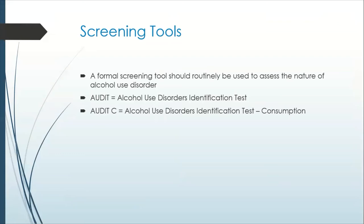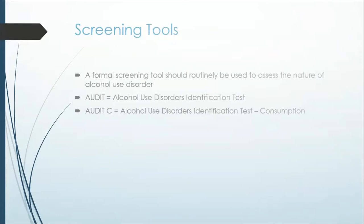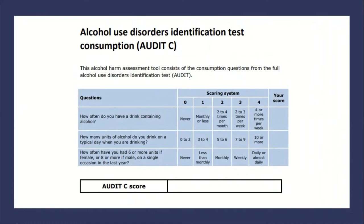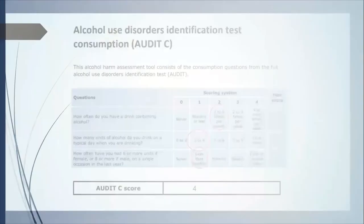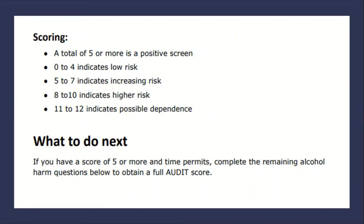I'll add a link to the description box below. I'll go through one of the AUDIT-C tools I've found online. The first question is: how often do you have a drink containing alcohol? I've scored two there. How many units of alcohol do you drink on a typical day when you're drinking? I'll score one there. How often have you had six or more units if female, or eight or more if male, on a single occasion in the last year? Less than monthly. So my score here is four. A total of five or more is a positive screen, so my score of four indicates low risk. The next stage up would be increasing risk, then higher risk, and a score of between 11 to 12 could indicate possible dependence.